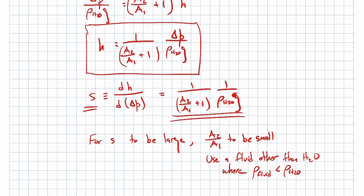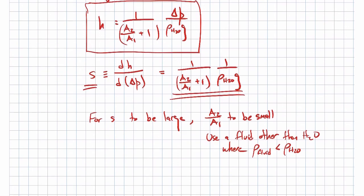You could also make gravity smaller to increase sensitivity, but that's not practical. So the practical approaches are minimizing A2/A1 and using a lower-density fluid. That's it for this example.